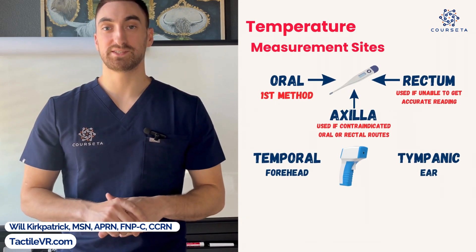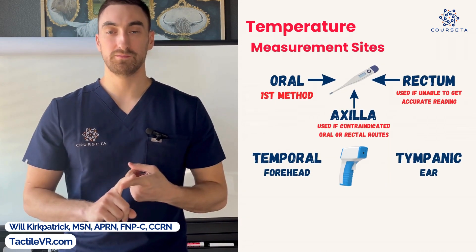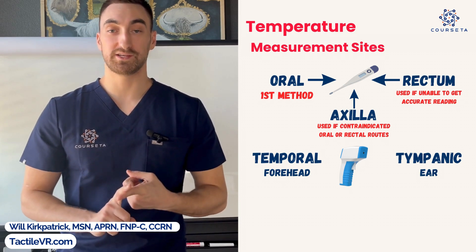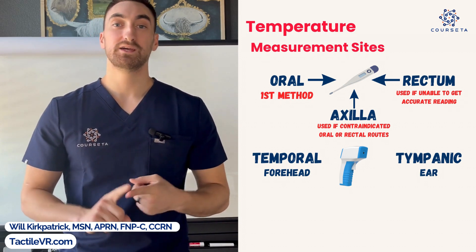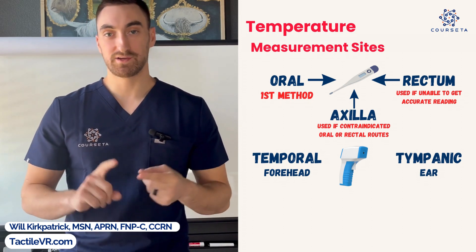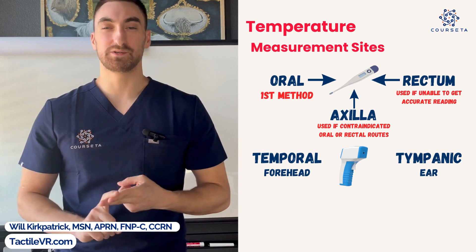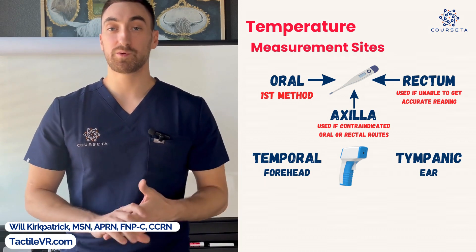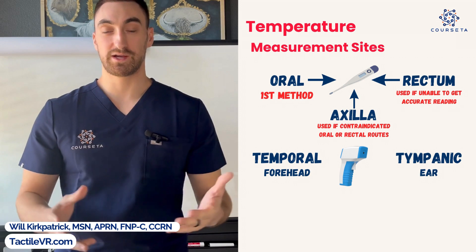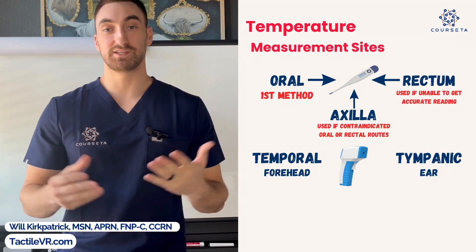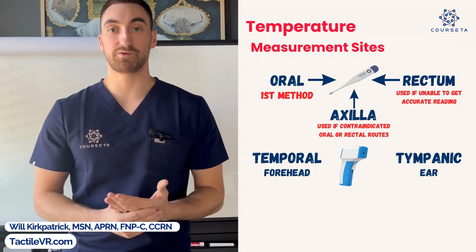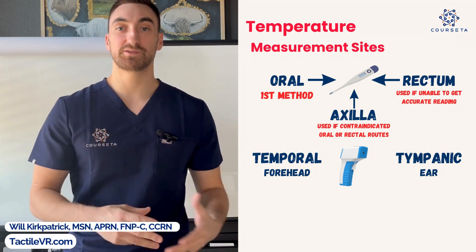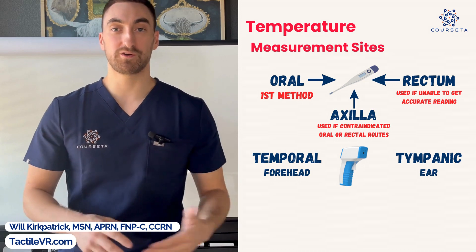Now let's go over temperature measurement sites. Number one is oral — this is usually our most preferred because it is one of our most accurate. Our most accurate site is actually the rectum, which is not used unless we cannot get a temperature another way. In newer patients — pediatrics — rectal temperature is much more common because it's more difficult to obtain and they need a more accurate reading.